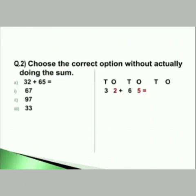Let us go to question number 2: choose the correct option without actually doing the sum — it is a type of mental math. Equation A: 32 plus 65 equals how much? We will add the 1's column: 2 plus 5 is 7. In the 10's column: 3 plus 6 is 9. So the answer is 97.